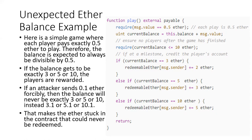Now let's look at an example of how this attack would actually work. Here we have a little game where players send half an Ether to a contract hoping to be the first player to reach one of three milestones: three Ether, five Ether, or ten Ether. The first player to reach three Ether gets a redeemable amount of two Ether; the first to reach five gets three Ether; and the first to reach ten gets five Ether.